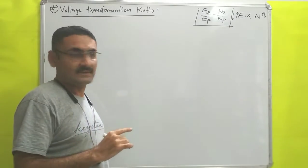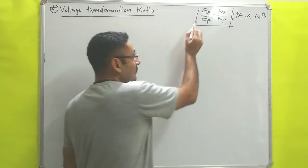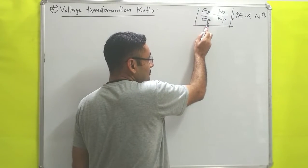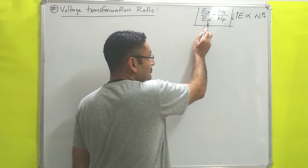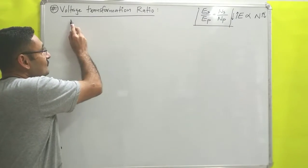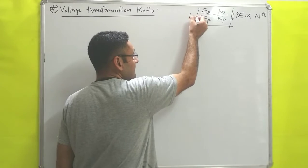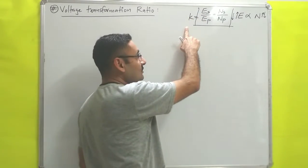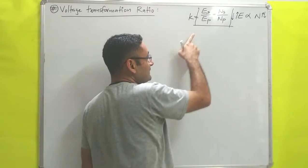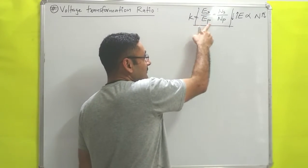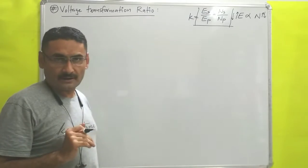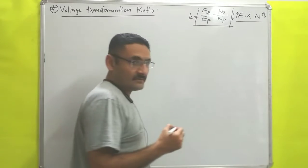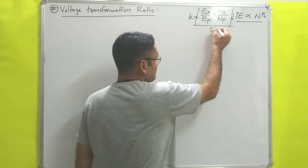In this video, we will derive the same equation in another way. The ratio of secondary coil voltage to primary coil voltage is known as the voltage transformation ratio, represented by K. So, voltage transformation ratio K equals voltage in secondary coil divided by voltage in primary coil. Voltage is directly proportional to number of turns.